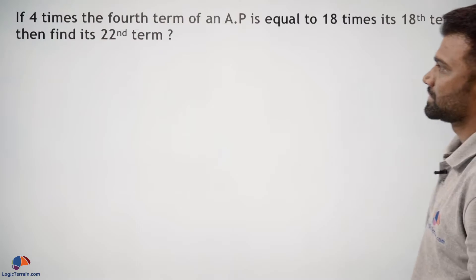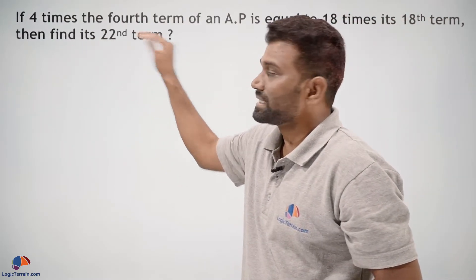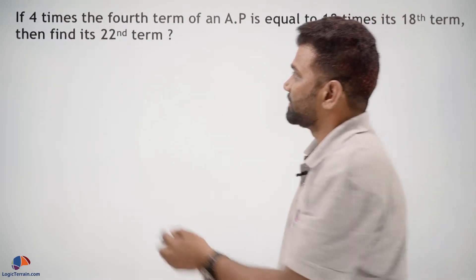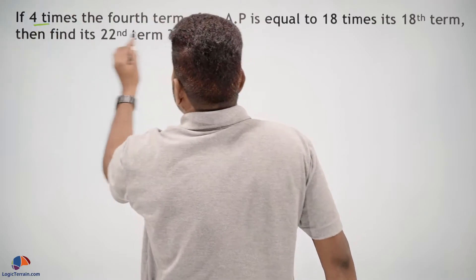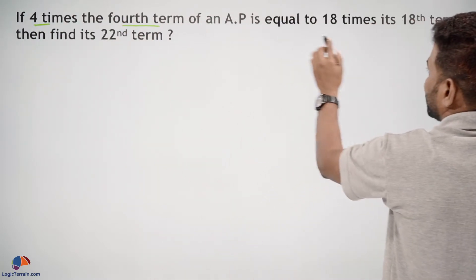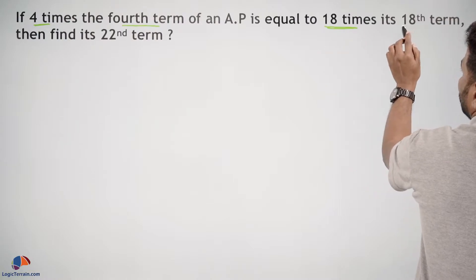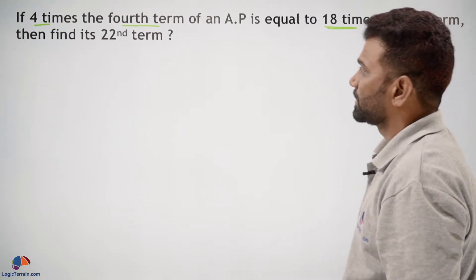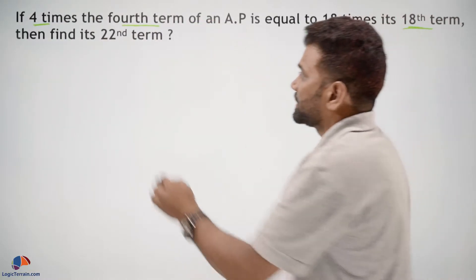then find its 22nd term. So in this question, it is given that 4 times the 4th term of AP is equal to 18 times the 18th term. By making use of this information, we need to find its 22nd term. Clear?